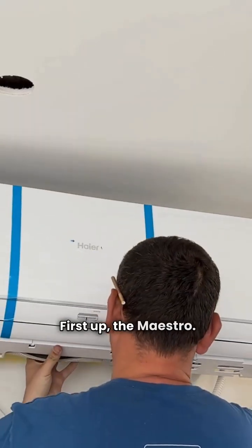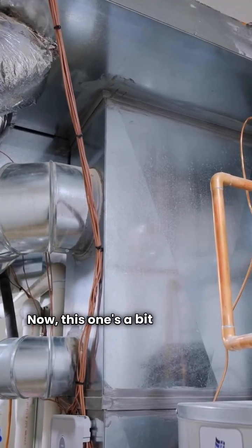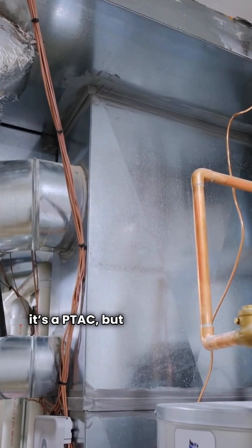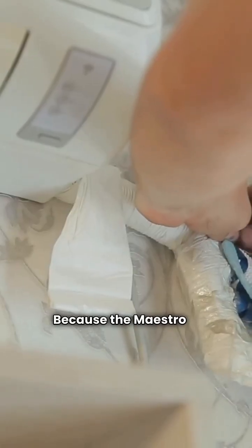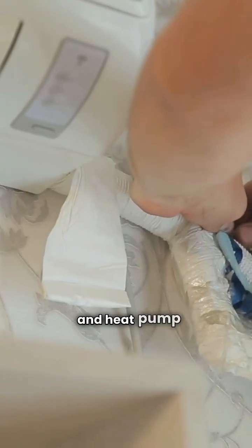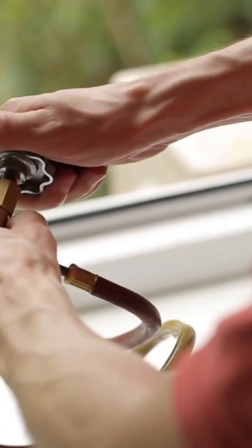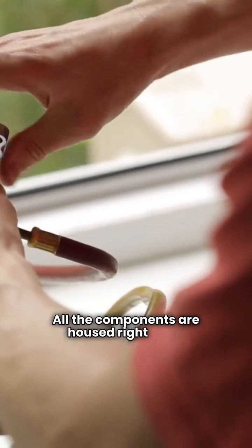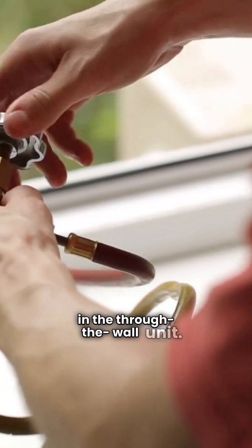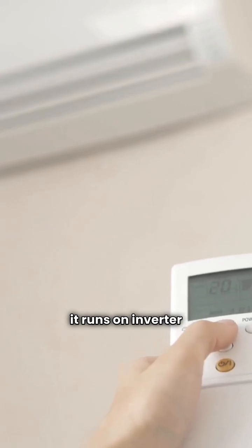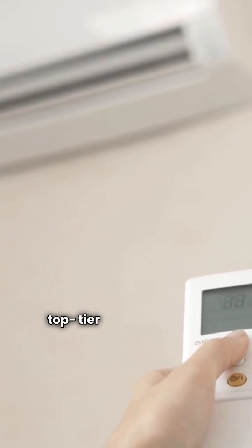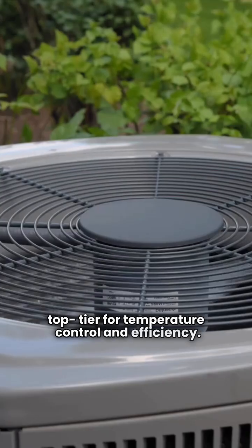First up, the Maestro. This one's a bit of a game changer because it's a PTAC, but it's often called a splitless system. Why? Because the Maestro is an air conditioner and heat pump with no outdoor unit. All the components are housed right there in the through-the-wall unit. It's a gorgeous Italian designed machine, and it runs on inverter technology, which is top tier for temperature control and efficiency.